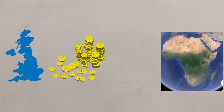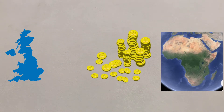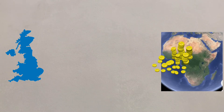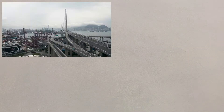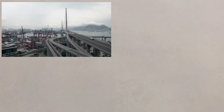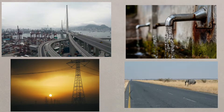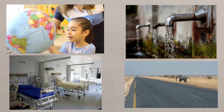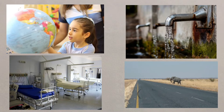Aid that is freely given, without condition, and that has a long-term benefit is the only kind of aid that will really help to reduce the development gap. This aid will help countries to invest in infrastructure and development projects like water supply, electricity grids and roads. Investing in education and health services will also have positive knock-on effects for the country.